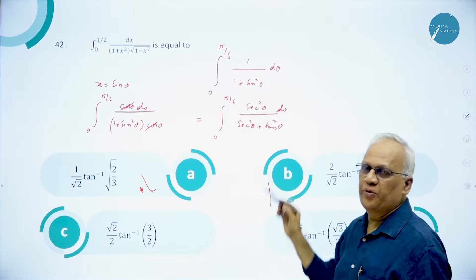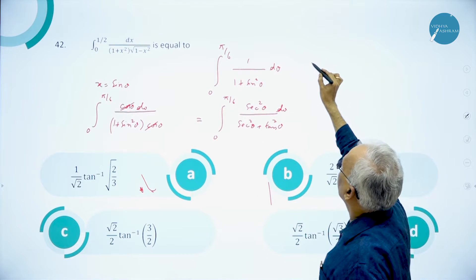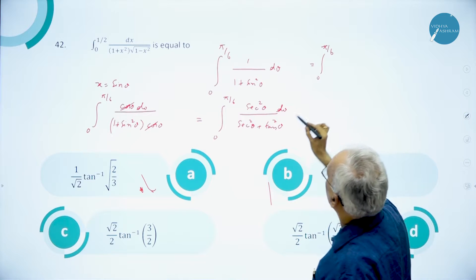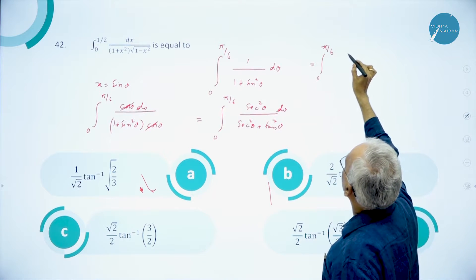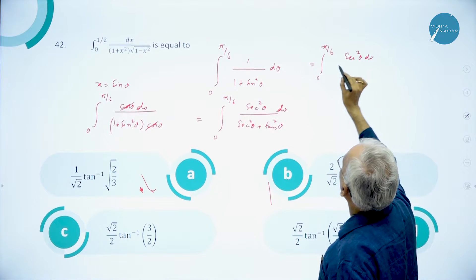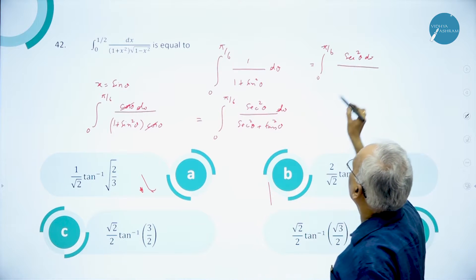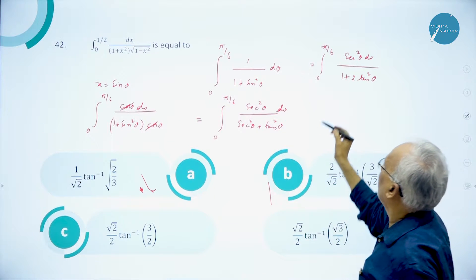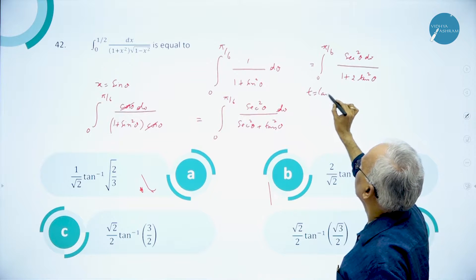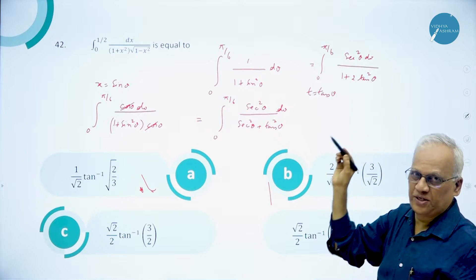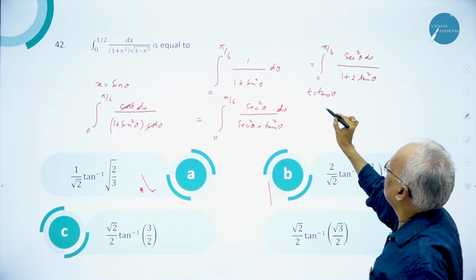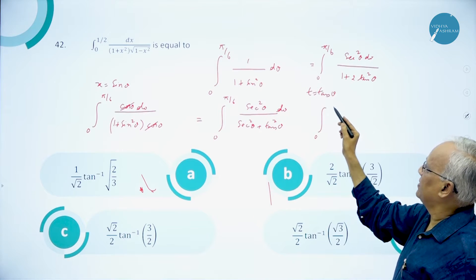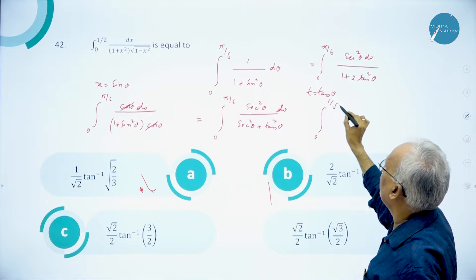So write this as the integral from 0 to π/6 of sec²θ dθ divided by (sec²θ + tan²θ), which gives sec²θ / (1 + 2tan²θ). Now put t = tanθ, so sec²θ dθ = dt. Change the limits: when θ=0, t=tan0=0; when θ=π/6, t=tan(π/6)=1/√3.